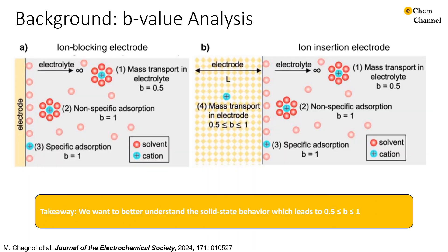In our paper, we spend some time delineating various conditions which may cause a B-value of 1 or a B-value of 1.5 to arise in either an ion blocking or an ion insertion electrode. However, the main concern of the paper is not with what happens at each of these extremes, but rather what may cause these intermediate B-values between 1.5 and 1 to arise. The meaning of these intermediate B-values is still open to some interpretation, which we wanted to explore further.